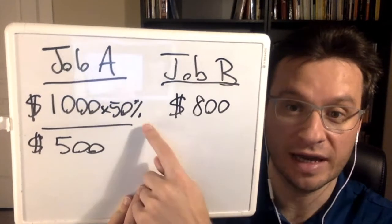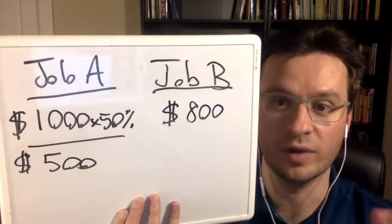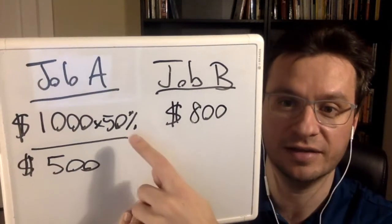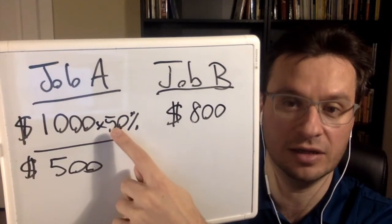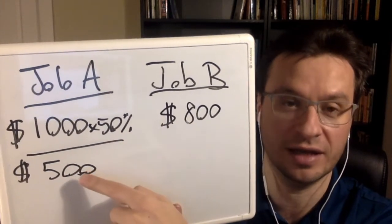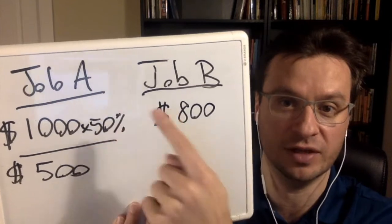Now, if you can gain an advantage over the other person — you find out who they are and make yourself more competitive — then you can start tweaking these numbers. Because as soon as your probability reaches over 80%, you'll realize that Job A is worth more than $800, and you should be applying for it rather than Job B. This calculation can come in handy when you're trying to figure out what to spend your time on.